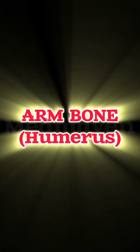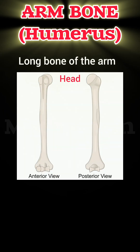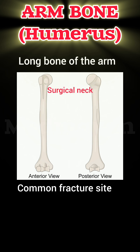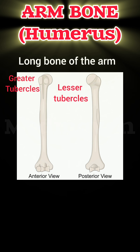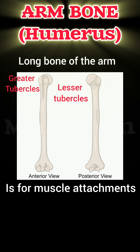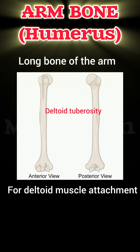The arm bone is the humerus, which is the long bone of the arm. Its head forms the shoulder joint. The surgical neck is the common fracture site, and a surgical neck fracture can cause axillary nerve injury. The greater and lesser tubercles serve as muscle attachment sites, and the deltoid tuberosity is for the deltoid muscle.